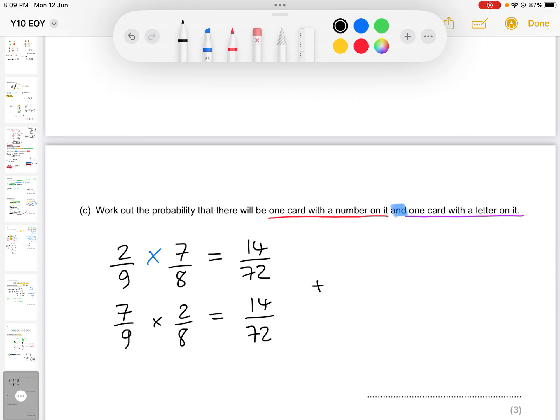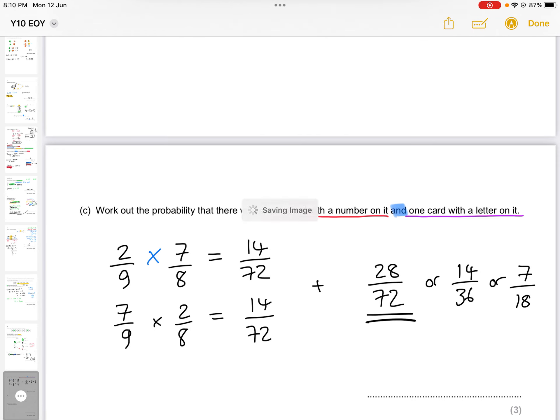We're then going to add these together because of the fact that there's more than one option of doing it. Whenever you have more options, you have ors. Technically, we could have this method, number first, then letter second, or letter first, then number second. So we add these together to give us 28 over 72. And you can also simplify that to give you a 14 over 36, or you could also simplify that to give you a 7 over 18. Any of these answers are going to be fully acceptable for our final answer. Of course, technically, the nicest looking one would be 7 over 18. Your calculator will simplify it for you, but either way, you're going to get the full marks.